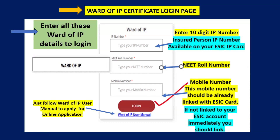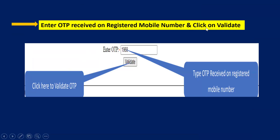This mobile number should be linked to your ESIC account. If it is not linked, you should immediately contact the nearest regional office and link your mobile number to your account. Only then will you have the facility to log in to this Ward of IP Certificate portal. A user manual is also attached on the Ward of IP page — you should read it carefully as it explains each step of the online application process. Enter the OTP received on the registered mobile number and click on Validate.